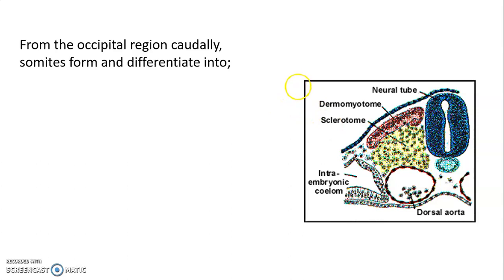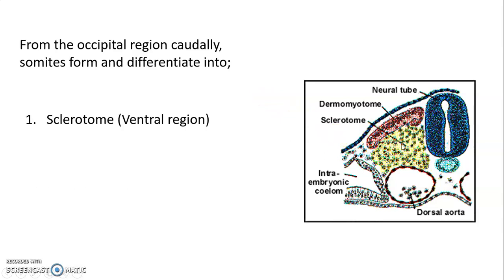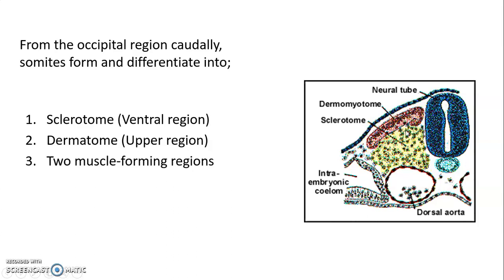From the occipital region caudally, these somites differentiate into three regions: the sclerotome, which is the ventral region; the dermatome, which is the upper region; and two muscle-forming regions which together with the dermatome are called the dermomyotome.